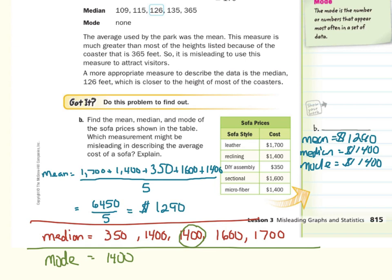We're being asked which measurement might be misleading in describing the average cost of the sofa? Well, most of these sofas are above 1400 dollars. All of them are either 1400 or above, except for the do-it-yourself assembly, which is only 350.